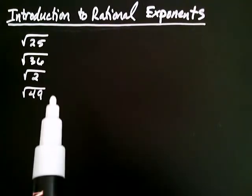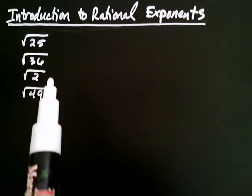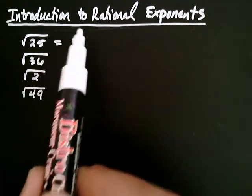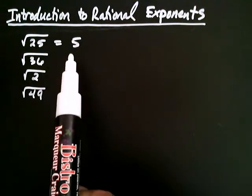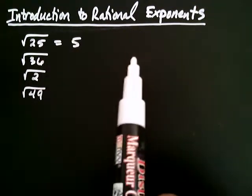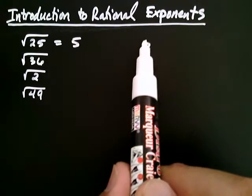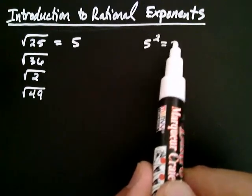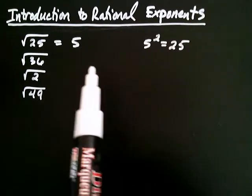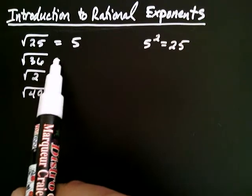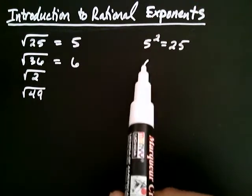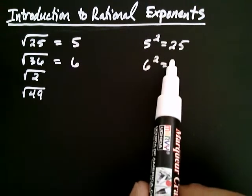I can simplify some of these. The square root of 25, I know that's equal to five. That tells me that five squared is equal to 25, as we know. And likewise, the square root of 36, I know that's equal to six, and that gives me six squared is equal to 36.